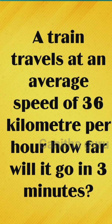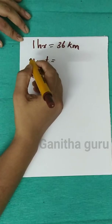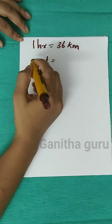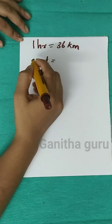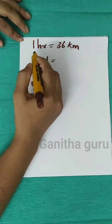A train travels at an average speed of 36 km per hour. How far will it go in 3 minutes?